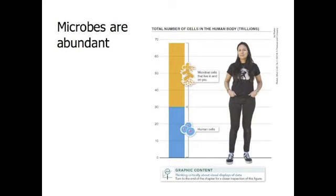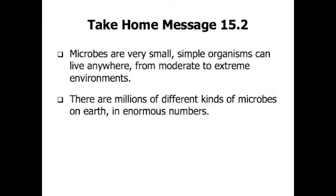Microbes are abundant. More than 100,000 bacterial cells per meter teem at the ocean surface, and diatoms — protists in the eukarya domain — are equally abundant. These densities translate to about 8 times 10 to the 30th individuals of just these two kinds of microbes in the world's oceans. Your own body contains about 68 trillion cells, but only 30 trillion of those are human cells. The remaining 38 trillion cells are microbes that live in and on you. Microbes are very small, simple organisms that can live anywhere from moderate to extreme environments, and there are millions of different kinds in enormous numbers.